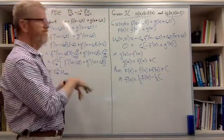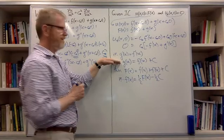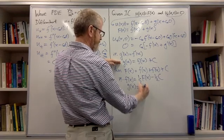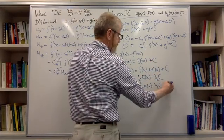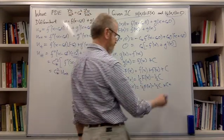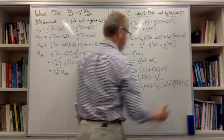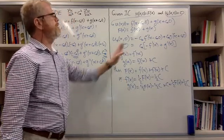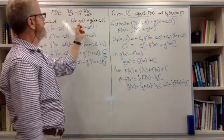Going back to the equation for little g: g(x) equals f(x) plus C, which is one-half capital F(x) minus one-half C plus C, giving g(x) equals one-half capital F(x) plus one-half C. Now we know what the little functions f and g are in terms of the initial condition capital F, with the initial velocity condition being zero.